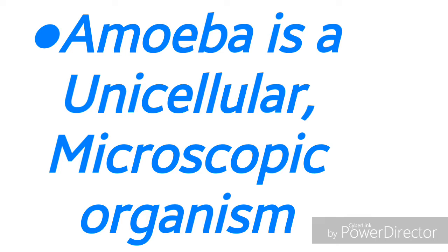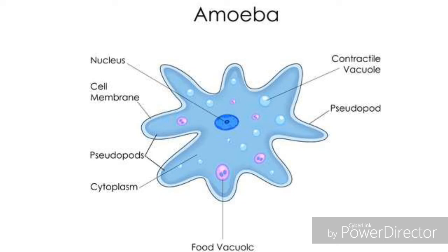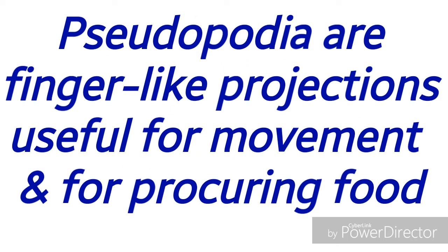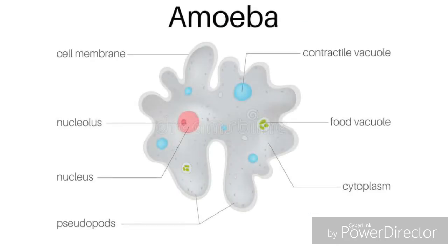Let us learn about amoeba. Amoeba is a unicellular microscopic organism that lives in small ponds and ditches. The whole living body consists of a single cell, and that single cell performs all the life activities. In amoeba, pseudopodia are present — these are finger-like projections which are useful to collect food material and also for movement, which we call locomotion.